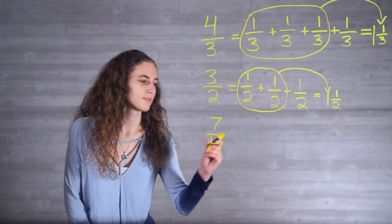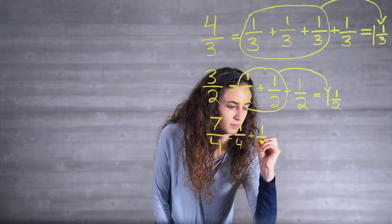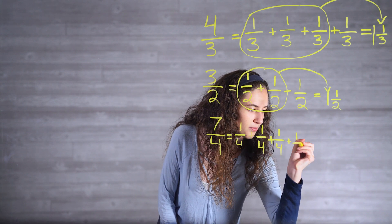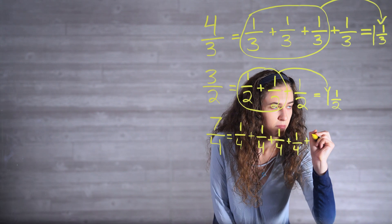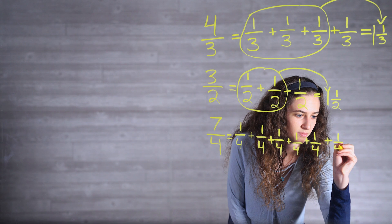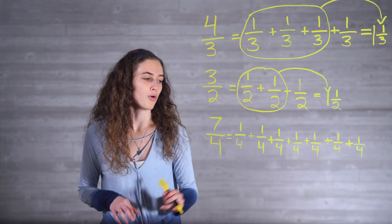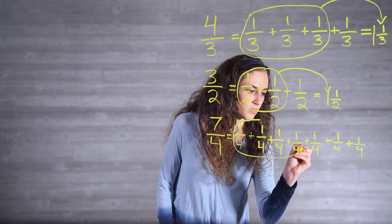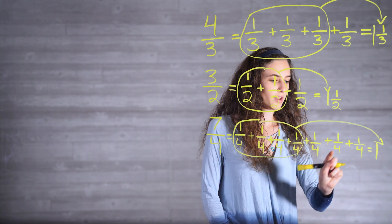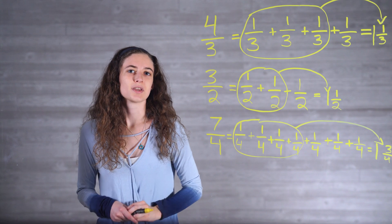Let's try one more example: 7/4. 7/4 is the same as 1/4 + 1/4 + 1/4 + 1/4 + 1/4 + 1/4 + 1/4. We know that 4 fourths are grouped as one whole, so these 4 fourths equal 1, and we're left with 3 fourths remaining. 7/4, written as a mixed number, is 1 and 3/4.